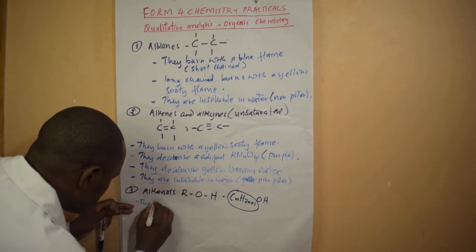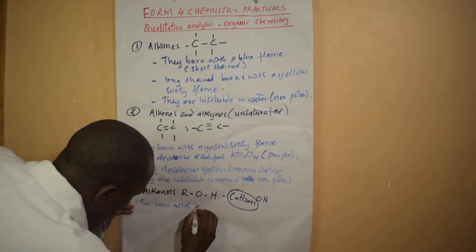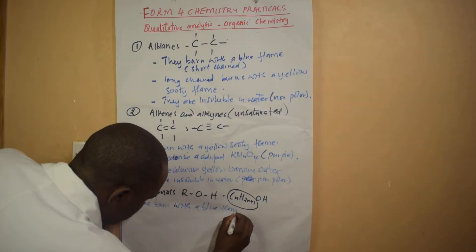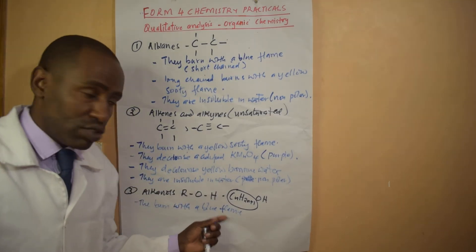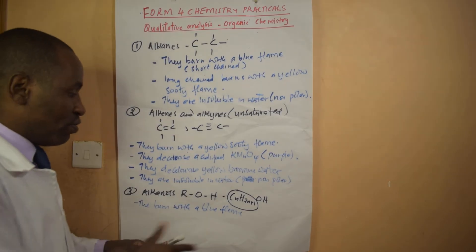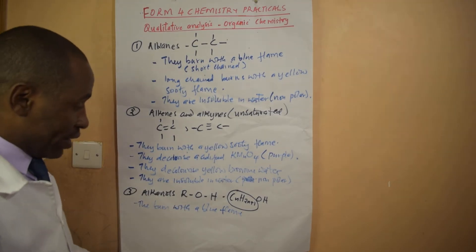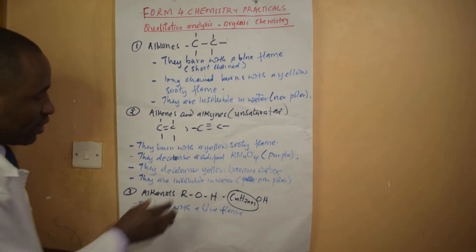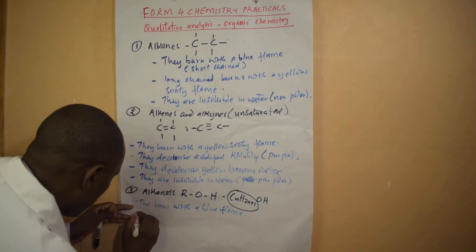The alkanols burn with a blue flame, just like the short-chain alkanes. However, it is also possible for long-chain alkanols to burn with a yellow flame.